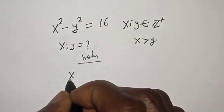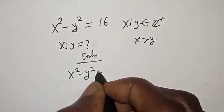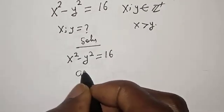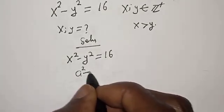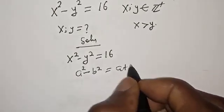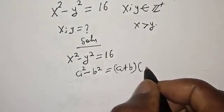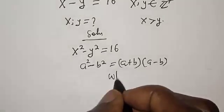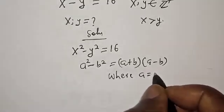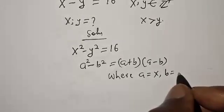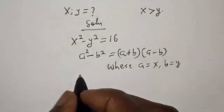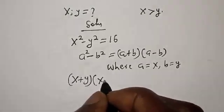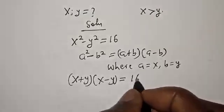We have x squared minus y squared is equal to 16. Take note of this exponential rule: a squared minus b squared is equal to (a plus b)(a minus b), where a is equal to x and b is equal to y. So this becomes (x plus y)(x minus y) is equal to 16.